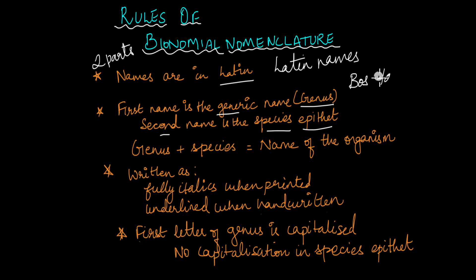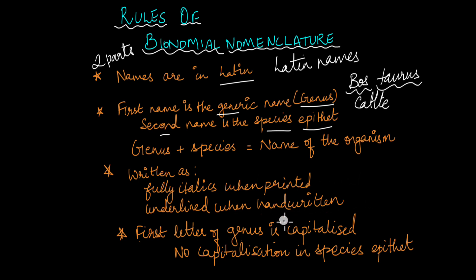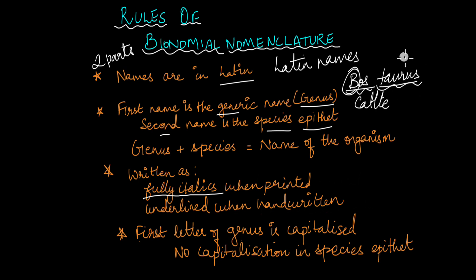For example, Bos taurus is the scientific name for cattle — cow and bull. Here the word Bos stands for the generic or genus name and taurus is the species epithet. Third, the way the name is written differs when printed versus handwritten. If printed, it needs to be in full italics; if handwritten, it needs to be underlined separately — so Bos taurus would be underlined like that separately. Last but not least, the first letter of the genus is capitalized. You can see that the letter B in Bos is capitalized, but there is no capitalization in the species epithet — taurus is written in all lowercase.